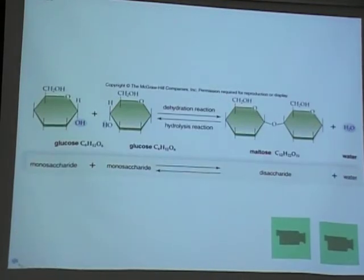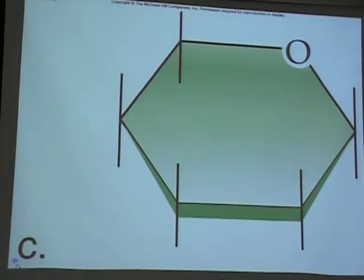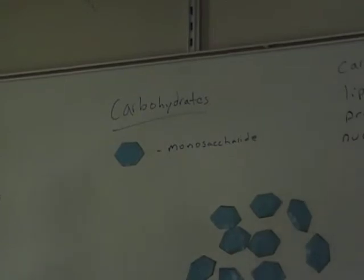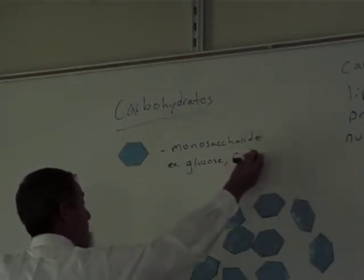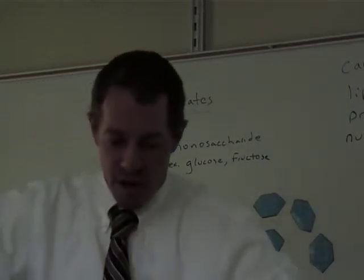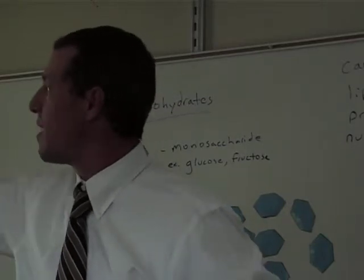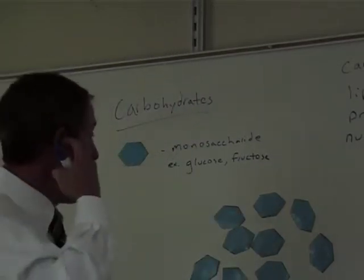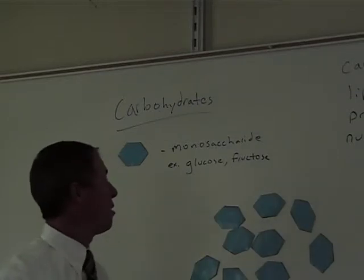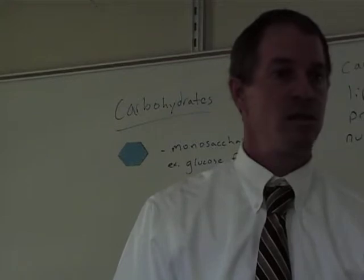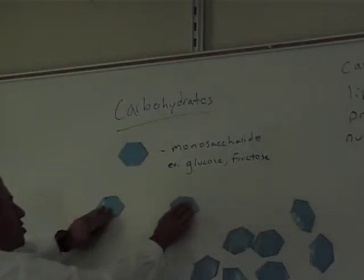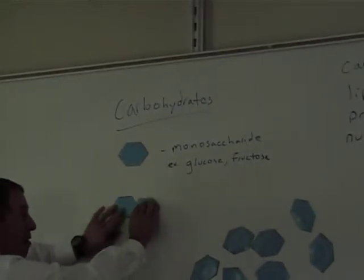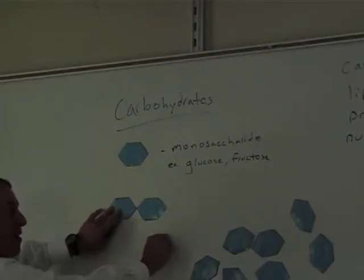Let's talk about a single unit, a single ring. We call that a monosaccharide. Mono meaning one, a single unit. And some examples of that are glucose and fructose. Glucose is blood sugar, sugar that floats around in your blood. It's also made in photosynthesis by all the plants out there. And fructose is fruit sugar. It's what makes a lot of fruits sweet to taste.